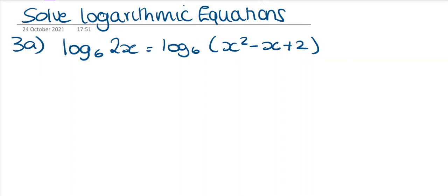We're going to solve some logarithmic equations using the one-to-one property. If we look here, we have log base 6 on both sides of our equation. So using the one-to-one property, we can rewrite this as 2x equals x squared minus x plus 2.